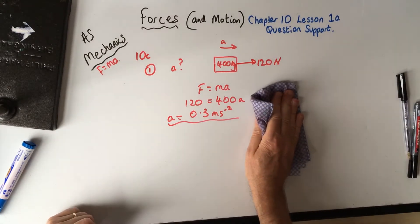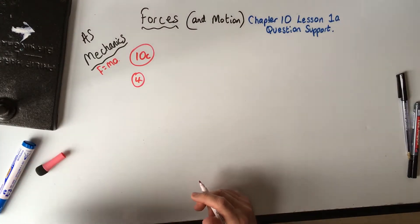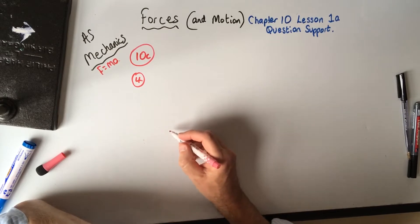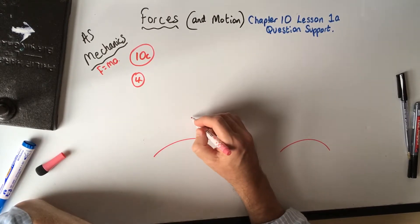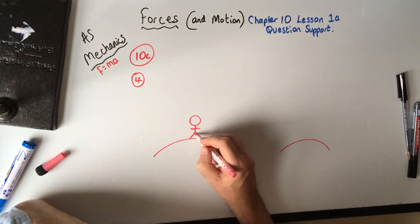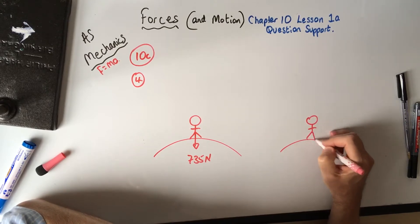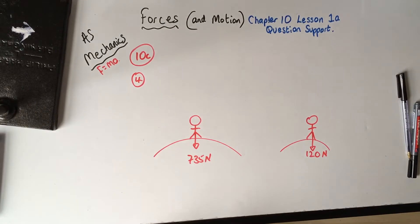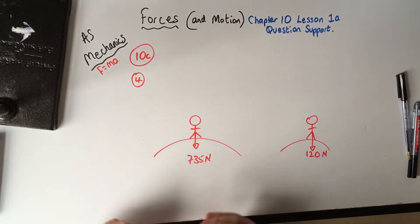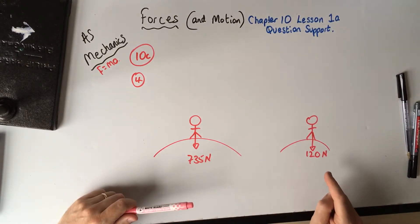I'm going to do question four as well from exercise 10C. It says an astronaut weighs 735 Newtons on Earth and 120 Newtons on the Moon. Same person — their mass is the same but the gravity on Earth and on the Moon is different. It's asking us to work out the acceleration due to gravity on the Moon — the pull of gravity there, just as an apple on Earth accelerates towards the planet at 9.8 metres per second squared.